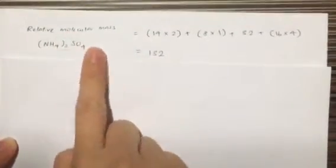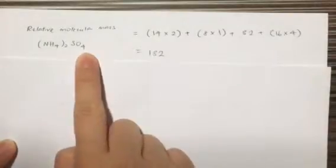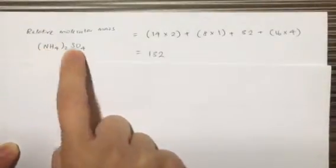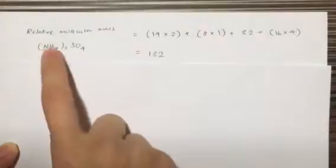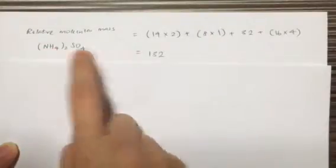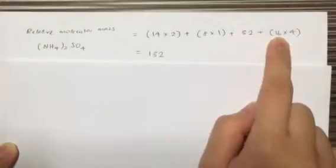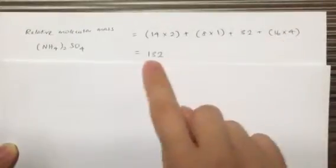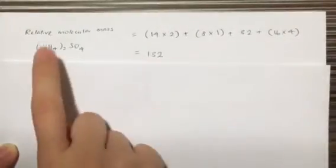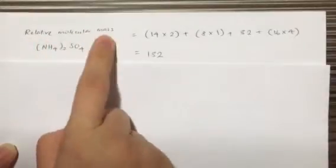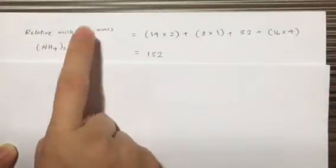So relative molecular mass of ammonium sulfate: nitrogen there's two, that's 14 times 2. Hydrogen there's eight. Sulfur that's 32. Oxygen there's 16, and there's four of it, so 16 times 4. And this gives me 132. This is relative molecular mass.